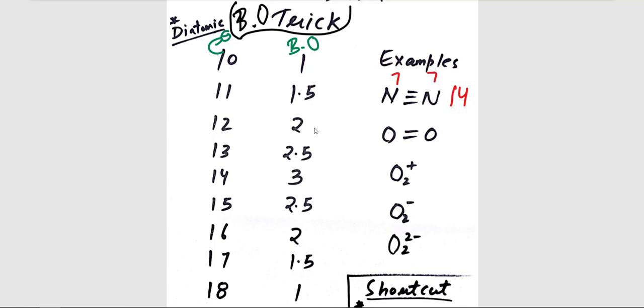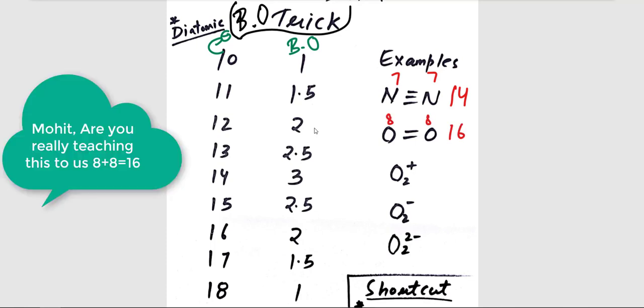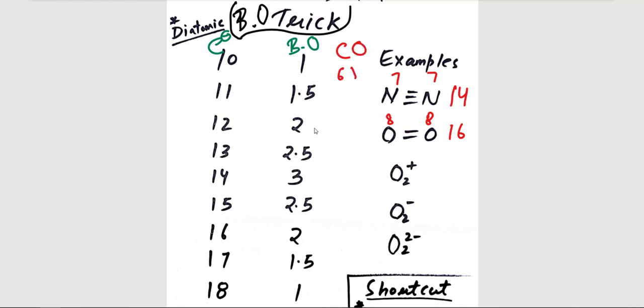For example, in O2, we have a total of 16 electrons—8 from one and 8 from another. Similarly, in CO, we have 6 plus 8, which equals 14 total electrons. This is the only prerequisite you have to understand to understand this trick.